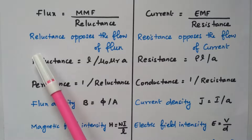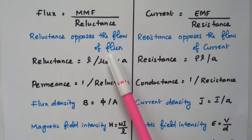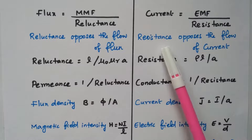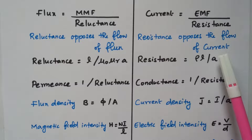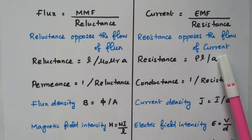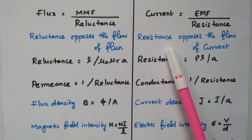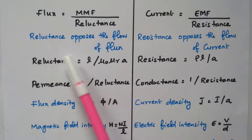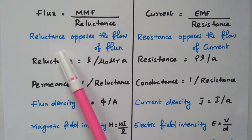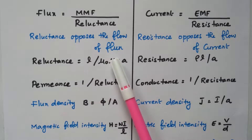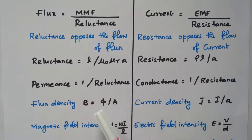Reluctance opposes the flow of flux, just as resistance opposes the flow of current in an electric circuit. The flow of current is opposed by resistance, and similarly, the reluctance opposes the flow of flux.